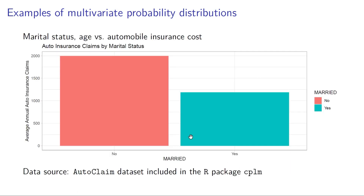One more example: this is an auto insurance claim dataset from the R package CPLM. When I look at the distribution of whether or not a policyholder is married and the average annual auto insurance claim paid, married policyholders had lower auto insurance claims — perhaps because being married makes you more responsible and you don't get into as many accidents as people who are not married.